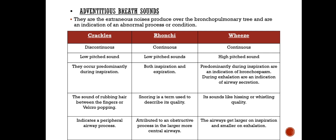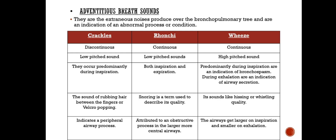Rhonchi — described with a snoring quality — are attributed to an obstructive process in the larger, more central airways. Wheeze is a continuous, high-pitched sound. Occurring predominantly during inspiration, it indicates bronchospasm; during exhalation it indicates airway secretion. It sounds like hissing or whistling. The airways get larger on inspiration and smaller on exhalation.